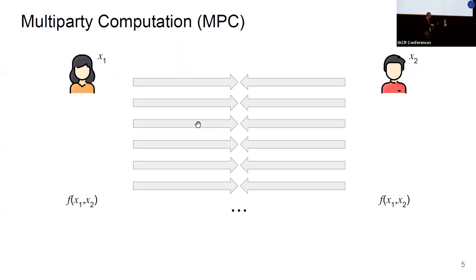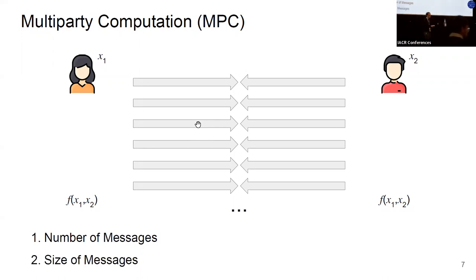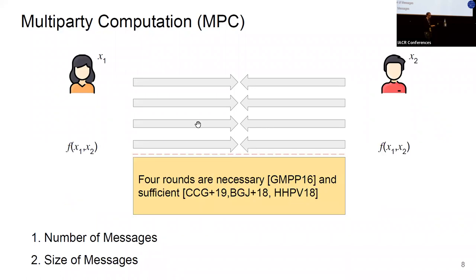There are two bottlenecks in this setting: the first is the number of messages the parties need to exchange, and the second is the size of the messages exchanged. There has been a lot of work on the first question, and it has recently been shown that four rounds are necessary and sufficient in the setting where adversaries are malicious, there is no setup, and we can have a dishonest majority. So this first issue is basically solved.